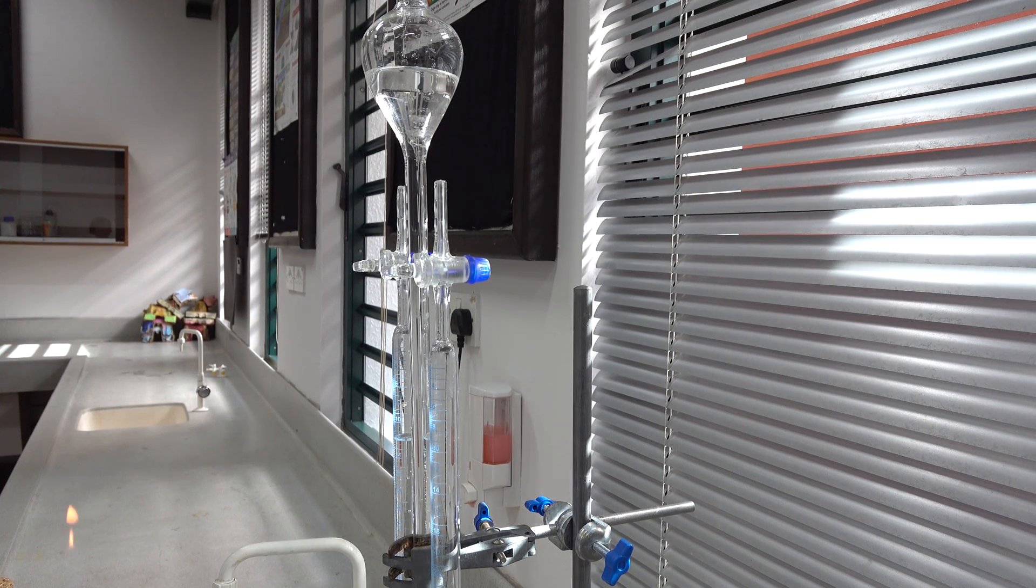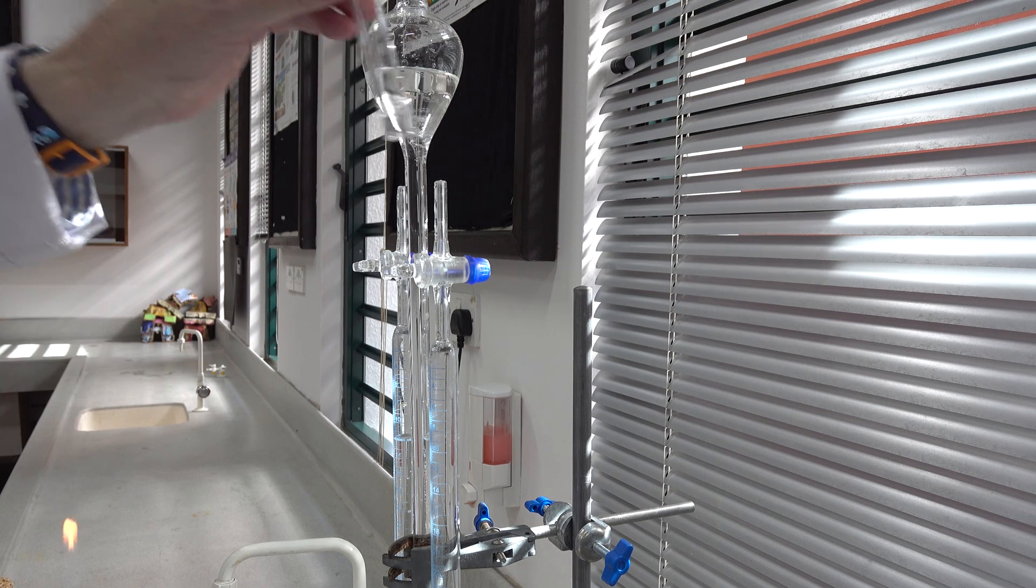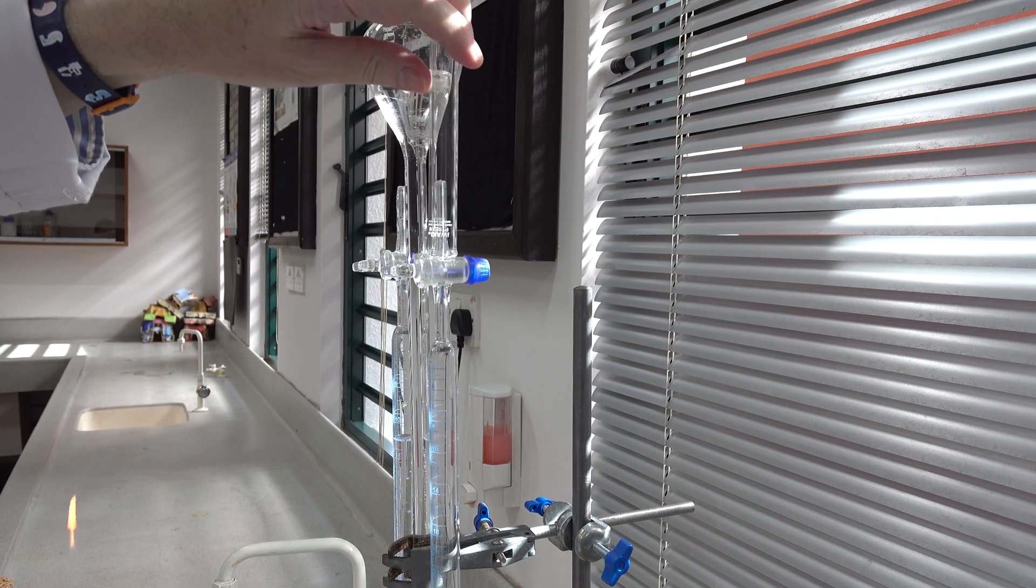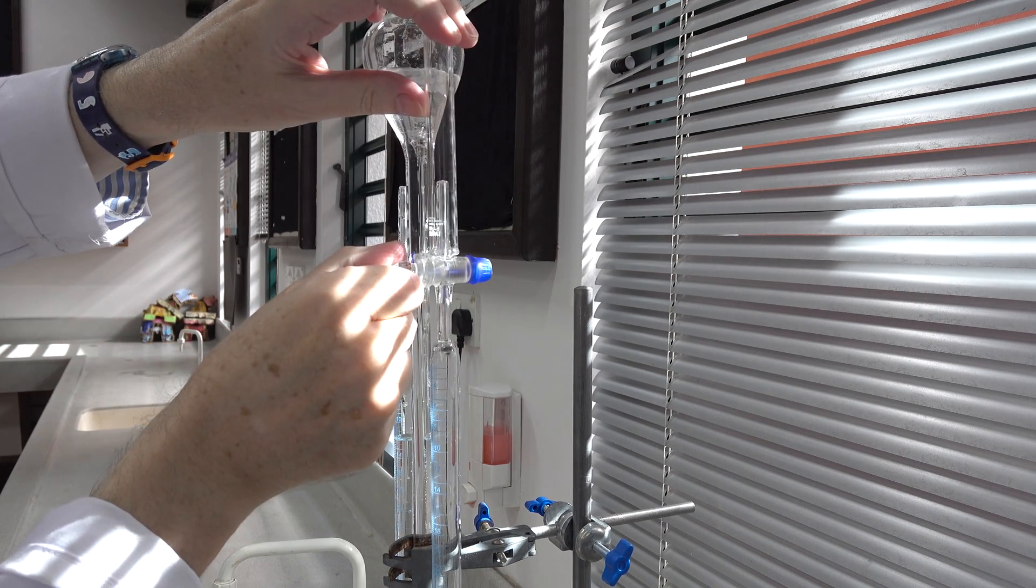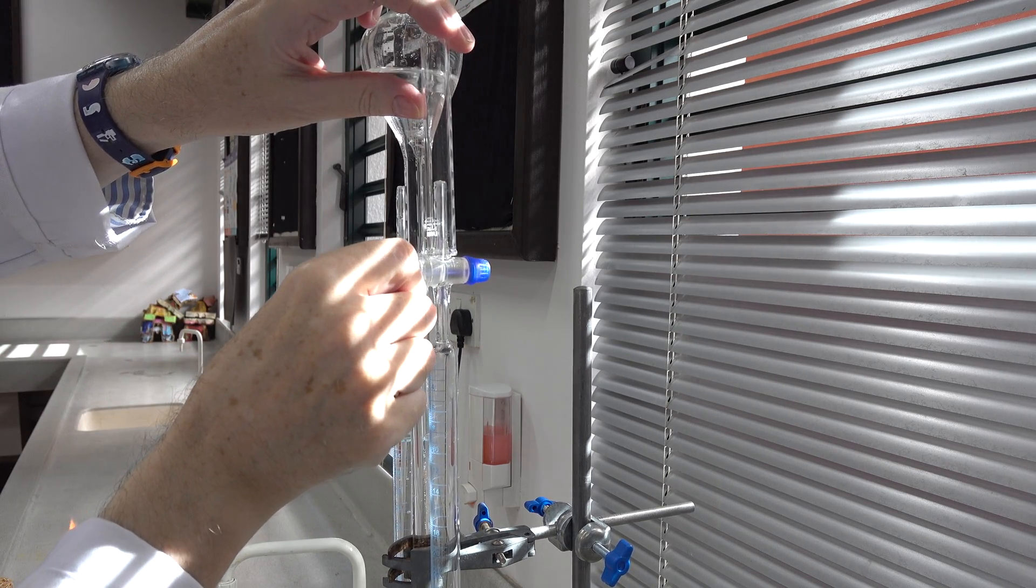Let's test the gases produced by the Hoffman apparatus. First we'll test the gas produced at the cathode, which is in the tube nearest to the camera. Let's fill the tube slowly with the gas.